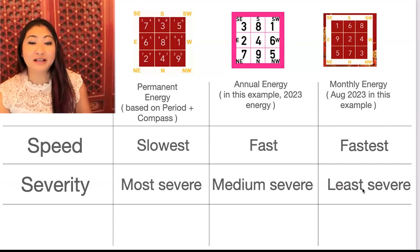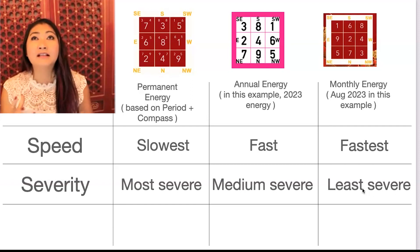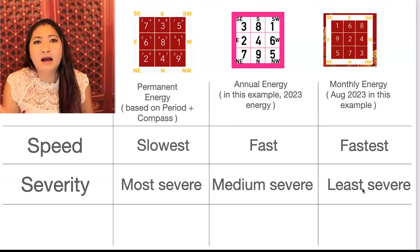And then the monthly energy is least severe. So if there is energy that leads to health challenges, it's probably just a cold or just a migraine that goes away maybe in like a couple of days and you don't normally get migraines, things like that.